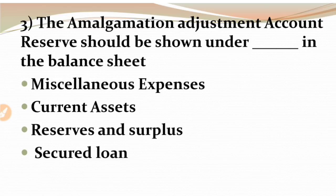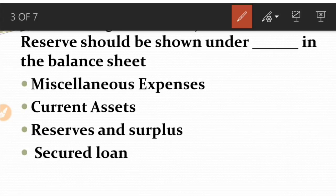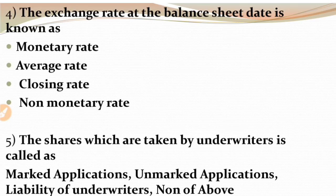MCQ 3: The amalgamation adjustment account reserve should be shown under which head in the balance sheet? The amalgamation adjustment account, which is created for statutory reserves, should be shown under Reserves and Surplus as a deduction (less). The options are miscellaneous expenses, fictitious assets, current assets, reserves and surplus, or secured loans. The right answer is Reserves and Surplus.